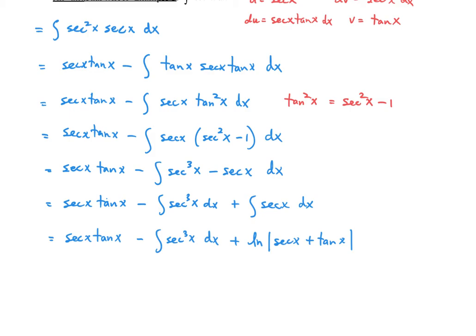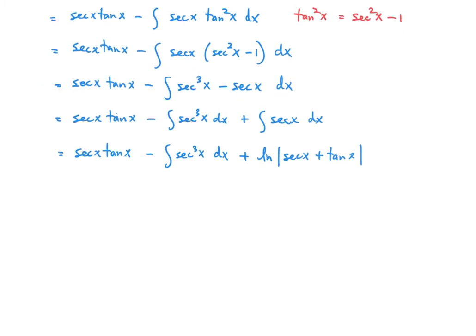So this simplifies to secant x tangent x minus the integral of secant cubed x dx plus the natural log of the absolute value of secant x plus tangent x. At this point, we notice we have the integral of secant cubed x dx on the right side — but that's the original question. Rewriting, the integral of secant cubed x dx equals secant x tangent x plus ln|sec x + tan x| minus the integral of secant cubed x dx.